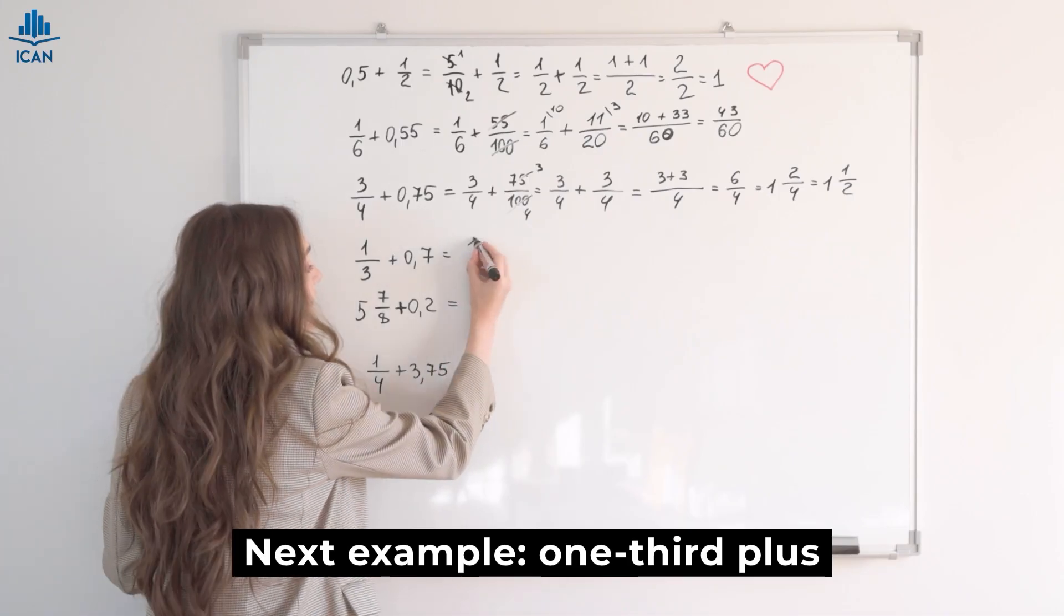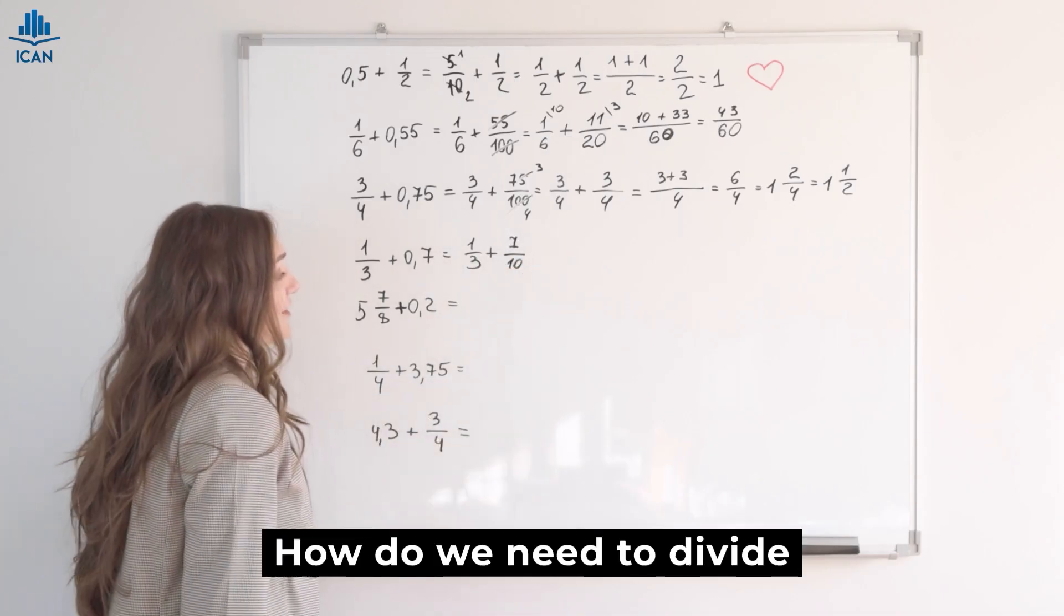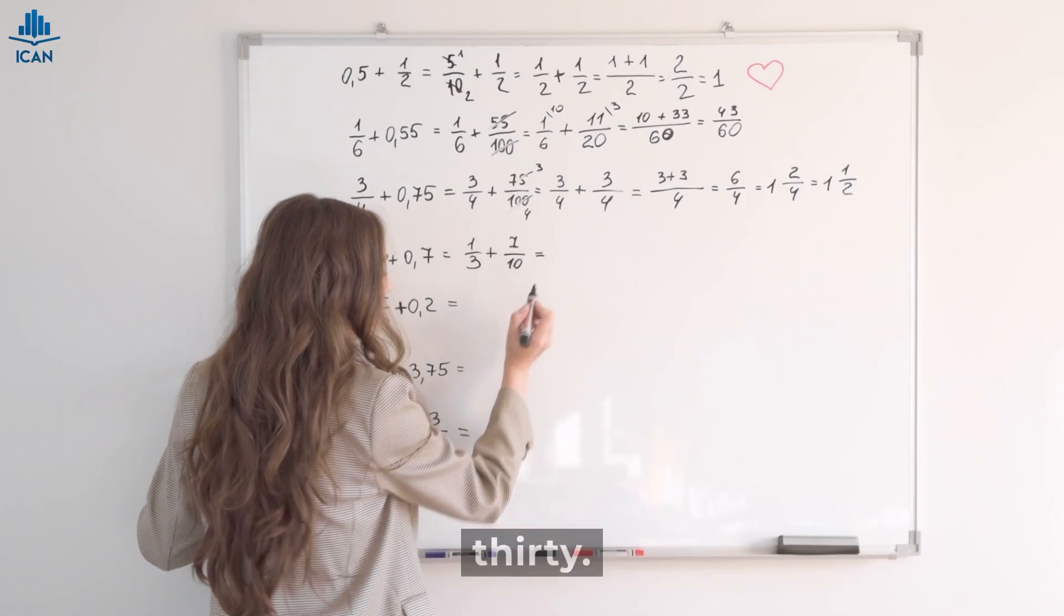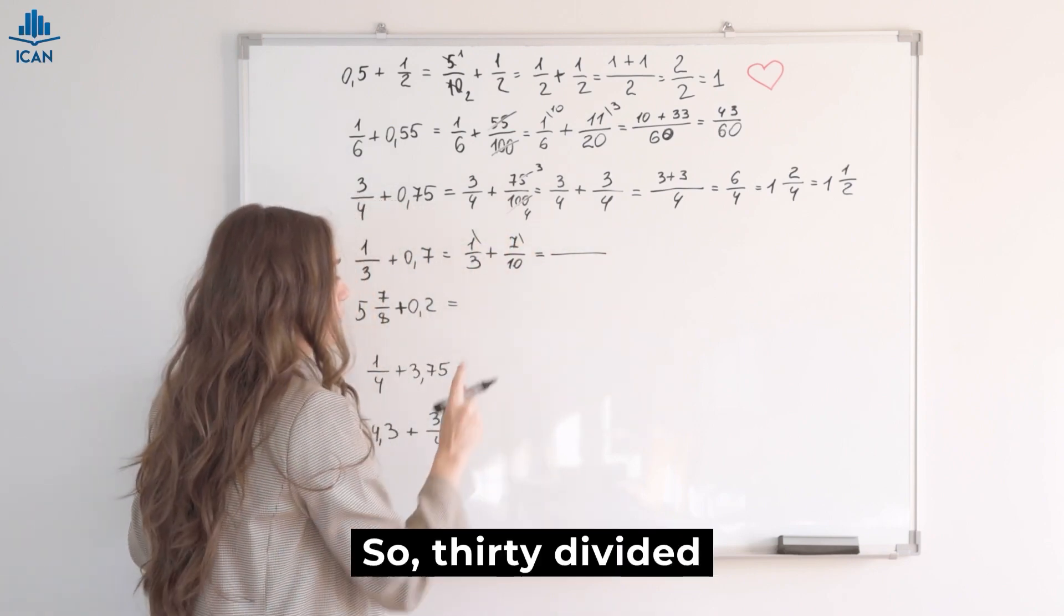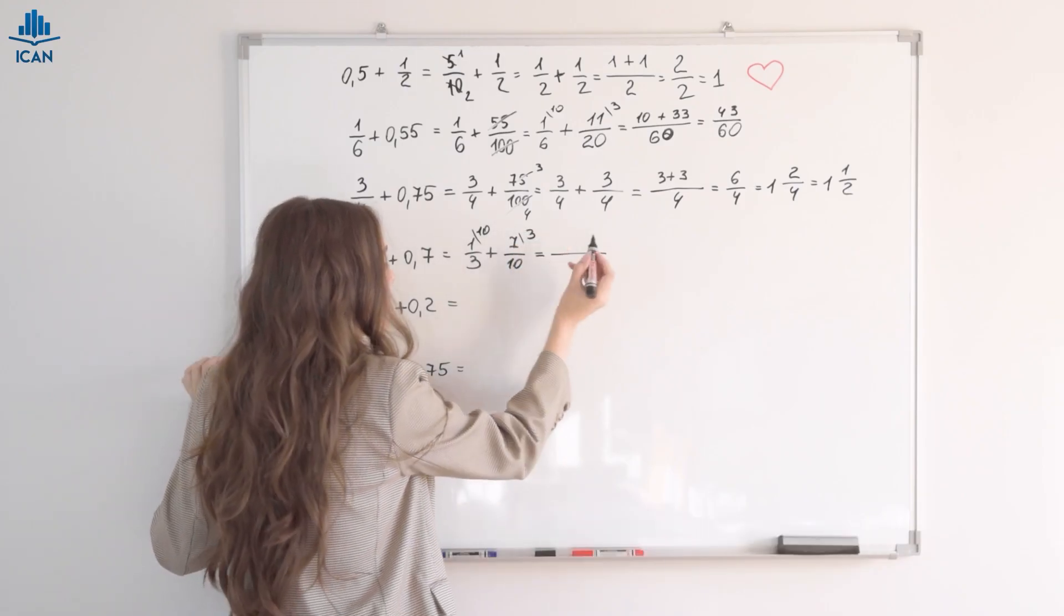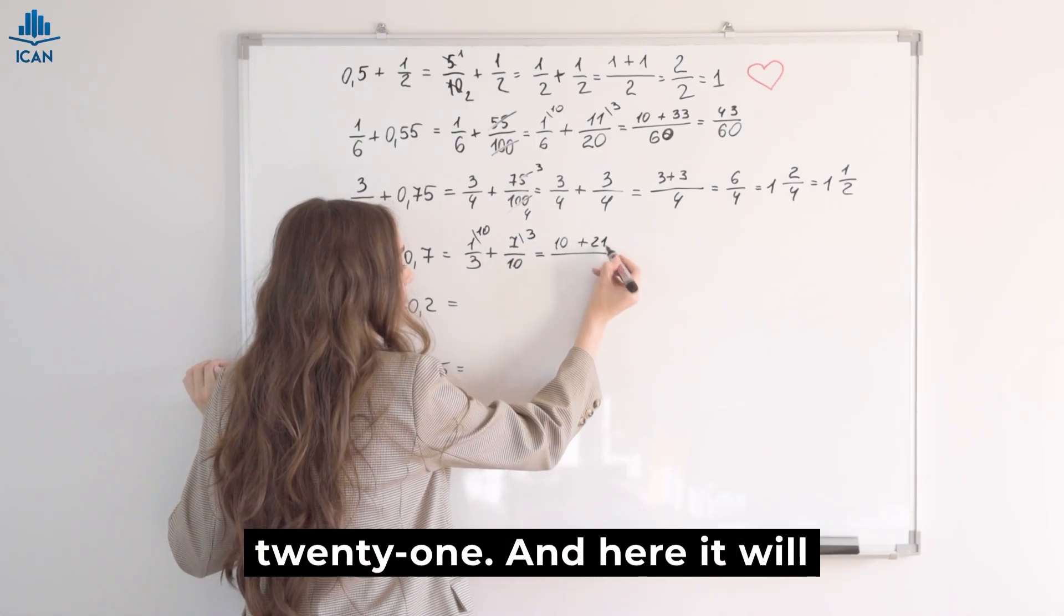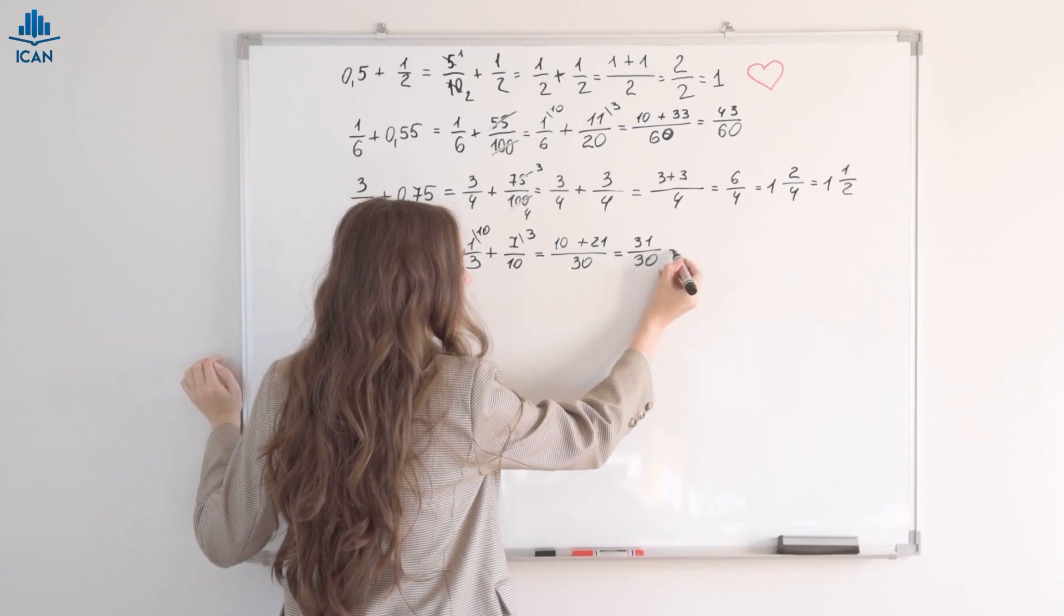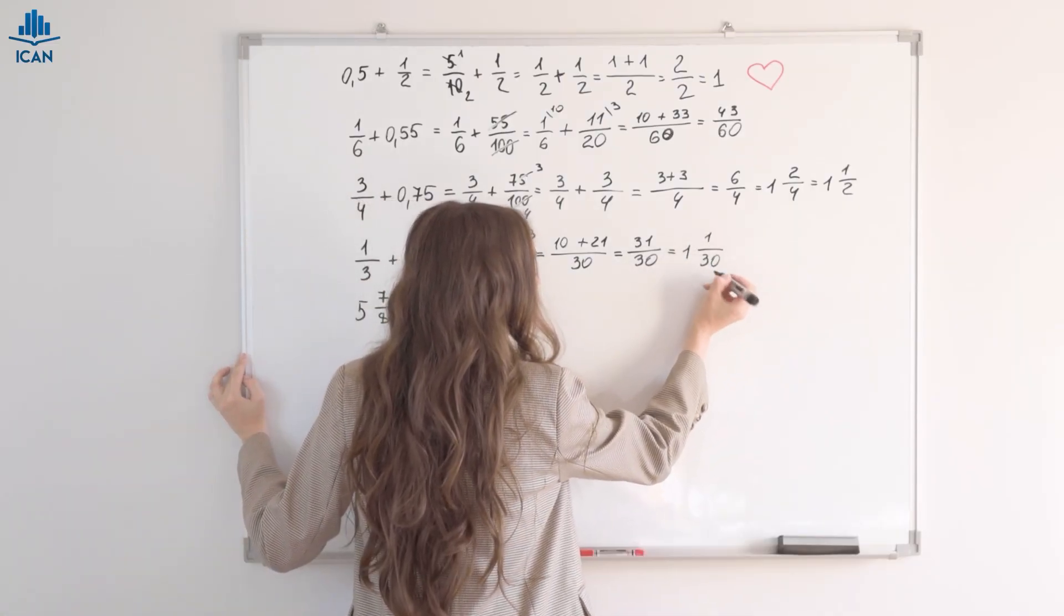Next example, one-third plus seven-tenths. How do we find a common denominator? Well, here we have no smaller common denominator than thirty. So, thirty divided by three is ten, and thirty divided by ten is three. We multiply one by ten, that's ten plus seven times three, which is twenty-one, and here it will be thirty. So, thirty-one divided by thirty. Better to get the whole part, right? One and one-thirtieth. Great.